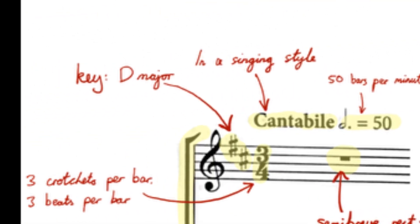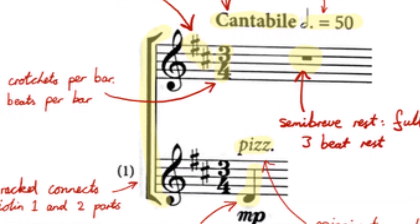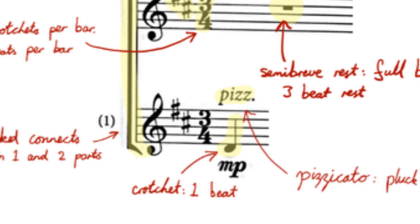Finally, on to the key. The key signature has two sharps, F sharp and C sharp, meaning that this piece is either in the key of D major or B minor. The use of Ds throughout, particularly the first note in the violin two part and the last note, tell us that this piece is in the key of D major.